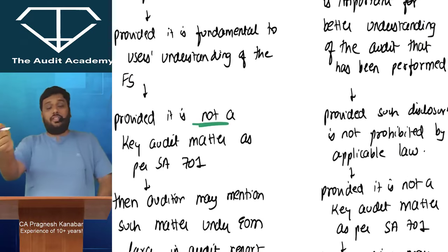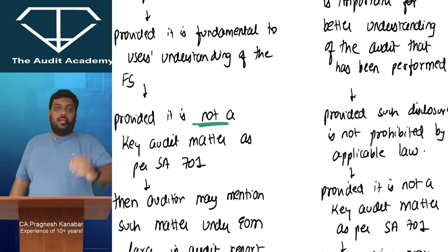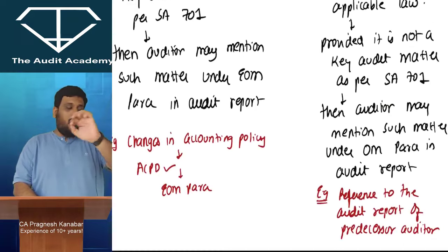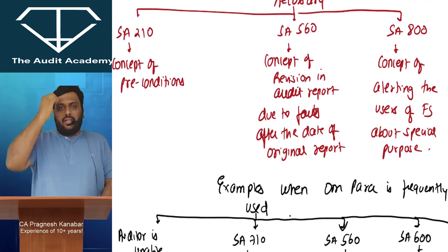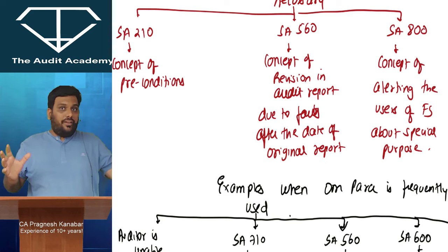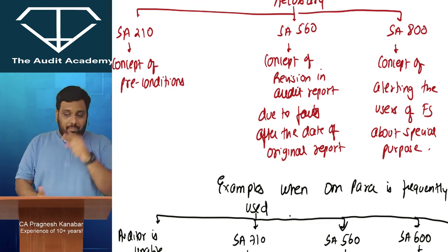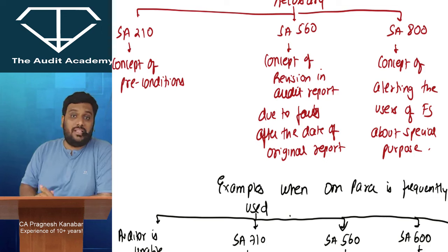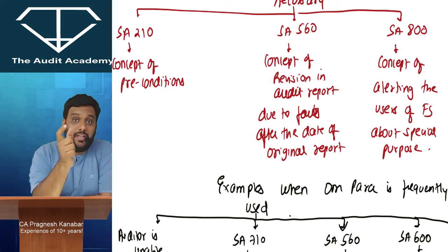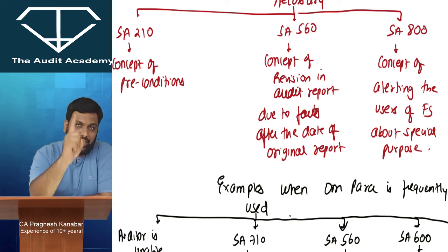There was one line in emphasis of matter and other matter — you can only write them if the matter is not a key audit matter. When you look at the audit report of Reliance Industries Limited, estimation of Oil and Gas Reserves is explained in their notes to accounts. Yet in that audit report, it has been explained under key audit matters — even though it is an accounting clarification. The reason for this will become clear in the next discussion on SA 701.